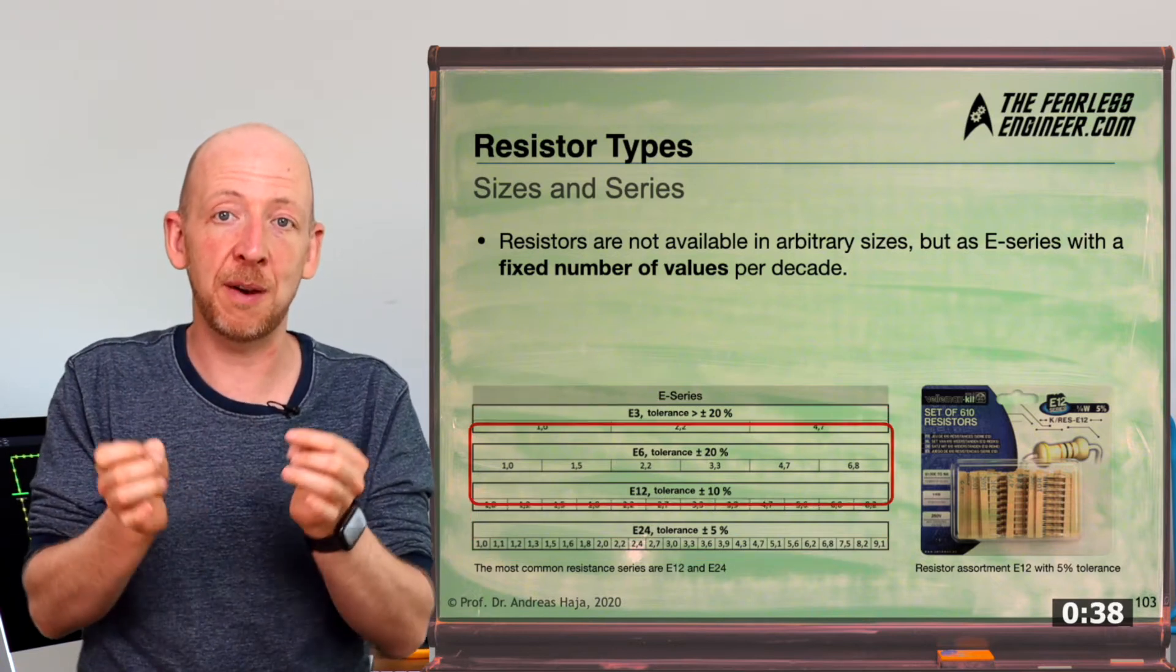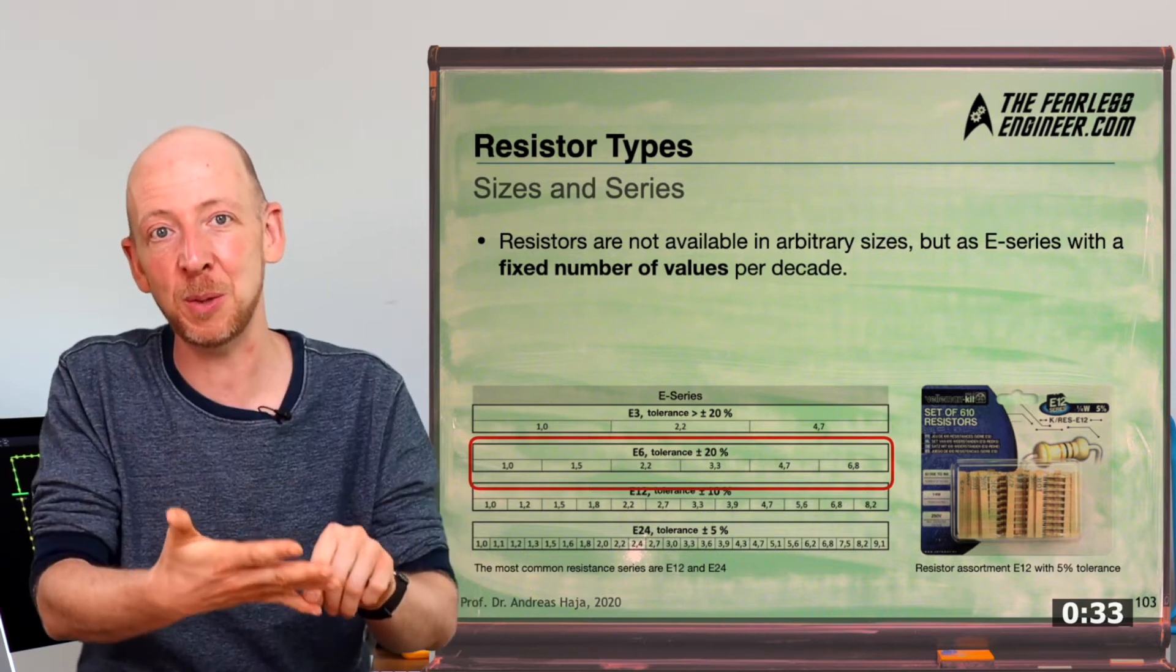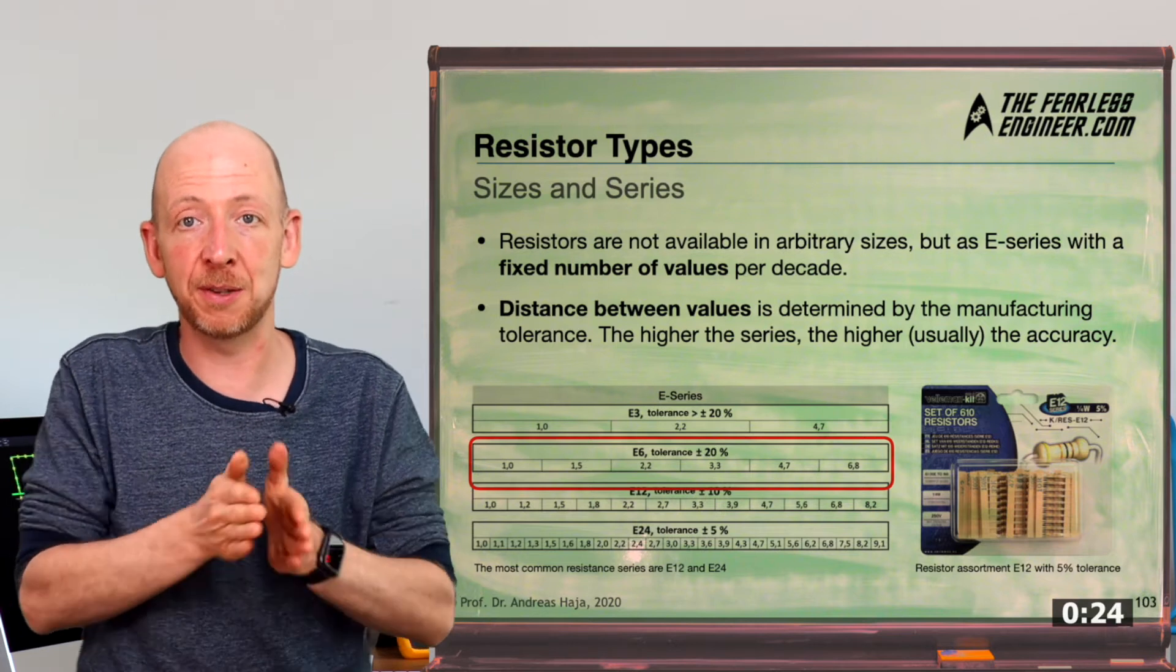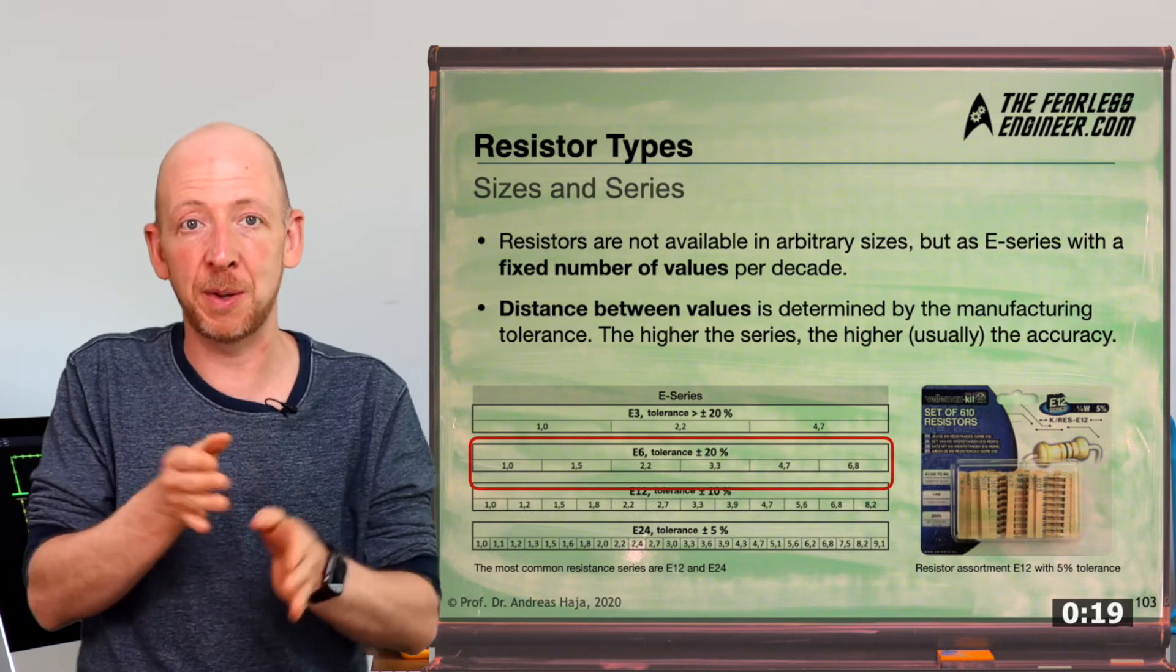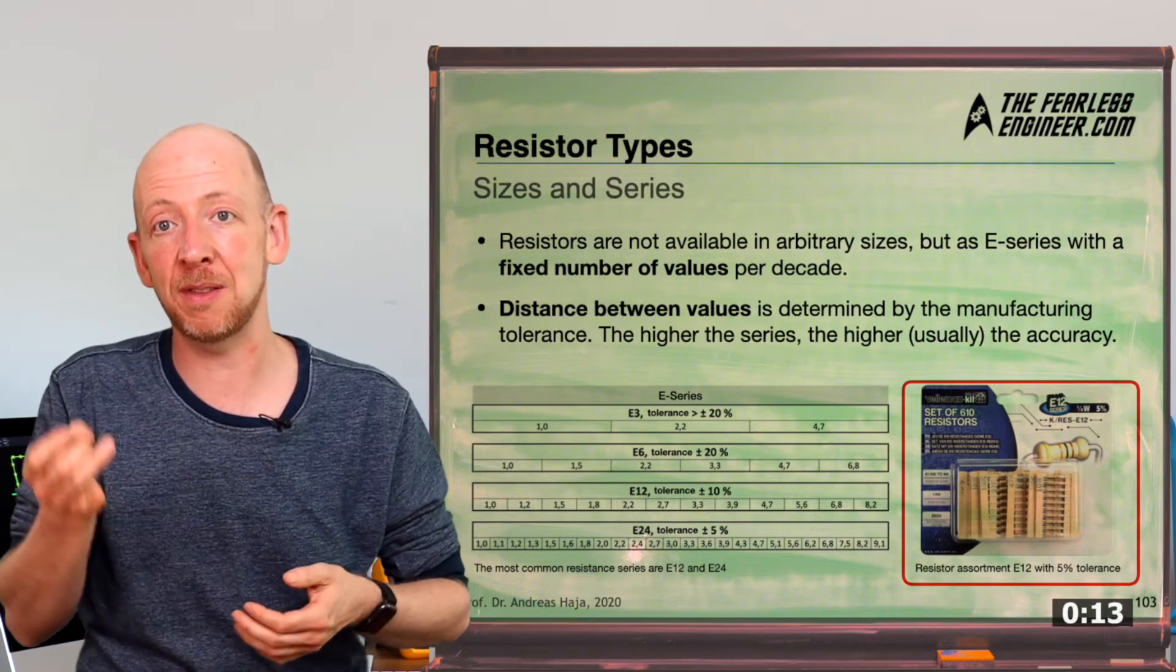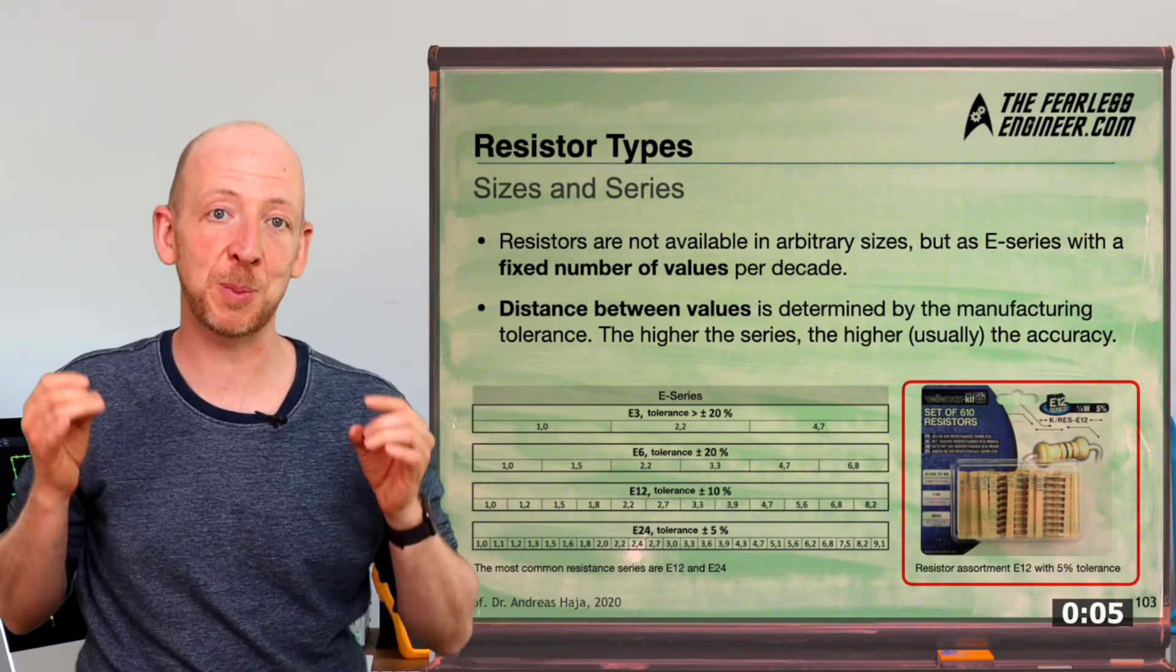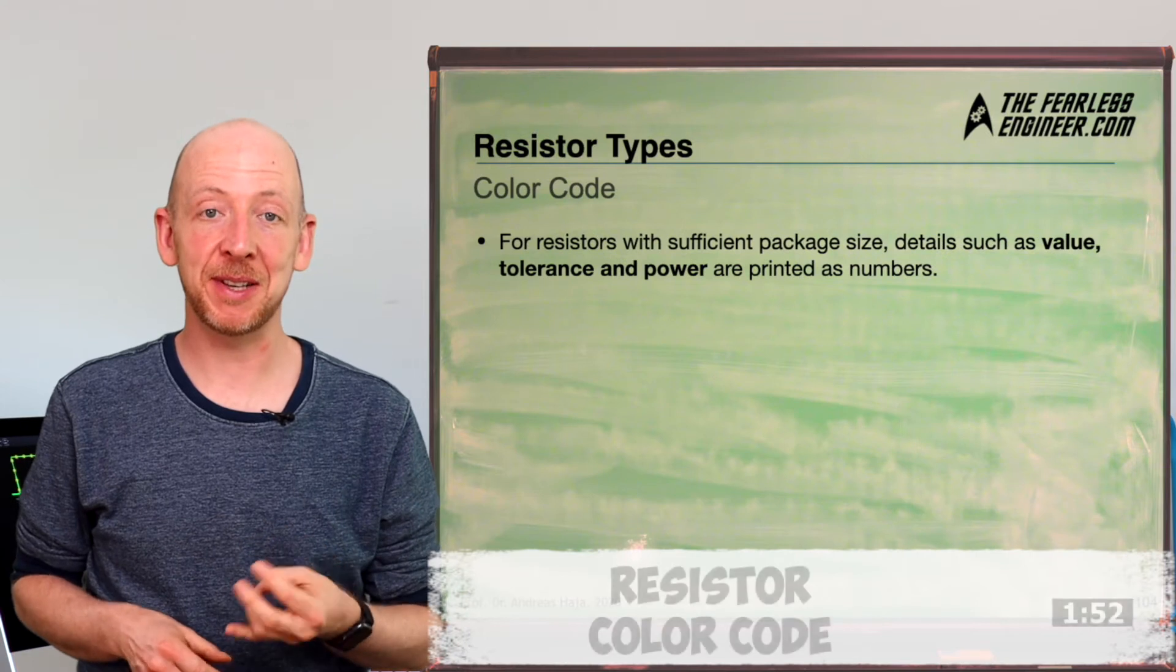And a similar system basically exists for resistor values as well. And this is what is called an E-series. And the idea is to divide each decade, which means 1 to 10 Ohms, 10 to 100 Ohms, and so on, into a fixed set of resistance values in between. In the E6 series, for example, we have the values 1, 1.5, 2.2, 3.3, 4.7, and 6.8 Ohms. And the distance between these values is essentially determined by the tolerance of the resistor. But in the picture on the bottom right, what you also can see here is that sometimes the tolerance of an E-series may be better than the theoretical values, because in the case of the resistor assortment you can see in the picture, which is an E12 series, the tolerance of 5% is much better than the one which is allowed by the specification, which would be up to 10%.